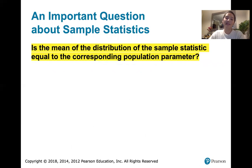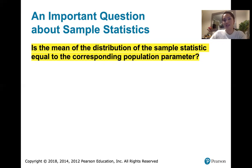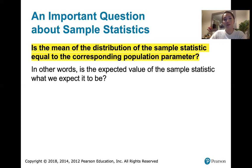You can ask this about different sample statistics — not just the sample proportion. We could ask the same question about the sample mean, sample variance, sample standard deviation, or sample median. The question is: is the mean of the distribution of that sample statistic equal to the corresponding population parameter? In other words, is the expected value of that sample statistic what we would hope it would be if it's estimating the population parameter correctly?